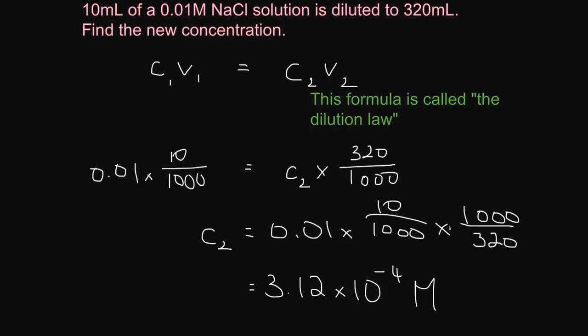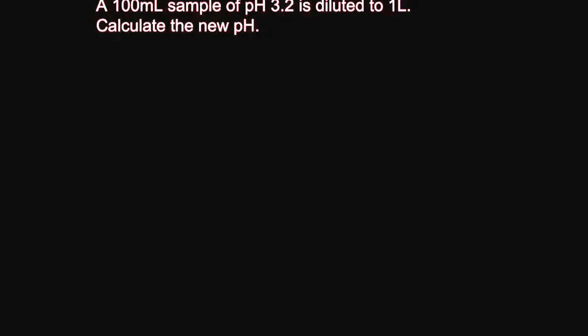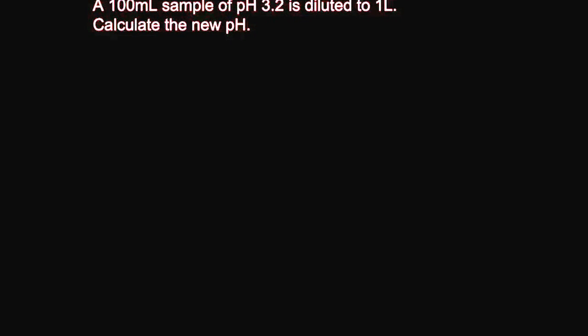Okay. I'll work through another one and I'll use pH for this one. So, we have a 100 mL sample of pH 3.2. That is diluted to one liter. I am calculating the new pH. So, pHs tell us about the concentration of H3O+. And they're linked by this. So, we have to start by converting our pH into a concentration of H3O+, is 10 to the minus pH is 10 to the negative 3.2. So, calculator equals 6.3 by 10 to the minus 4 molar.